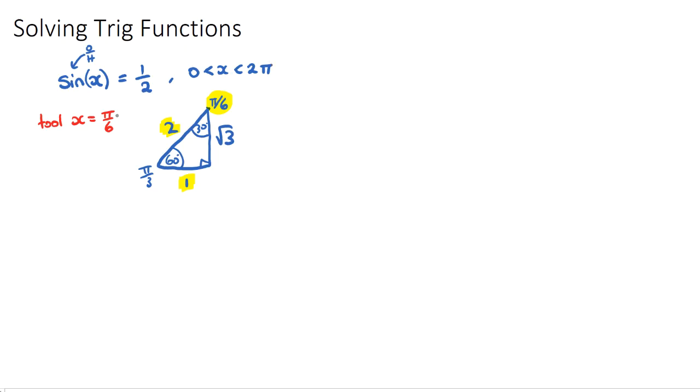So with that tool angle, I know that all of my angles will be pi on 6, it will have some sort of link to pi on 6. It'll be pi on 6 away from the x-axis, and I'll show you what that means.